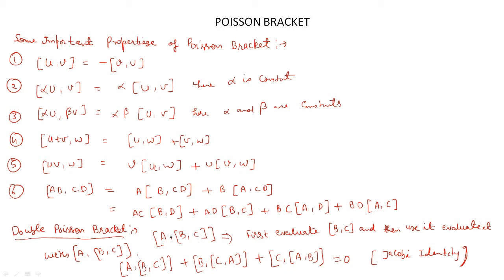Now we will discuss the double Poisson Bracket. The double Poisson Bracket is written with two brackets: first {b, c} is evaluated as one Poisson Bracket, and then this result is evaluated in a Poisson Bracket with a, giving {{b, c}, a}. When solving, we first evaluate the inner Poisson Bracket {b, c} and then evaluate that result with a.